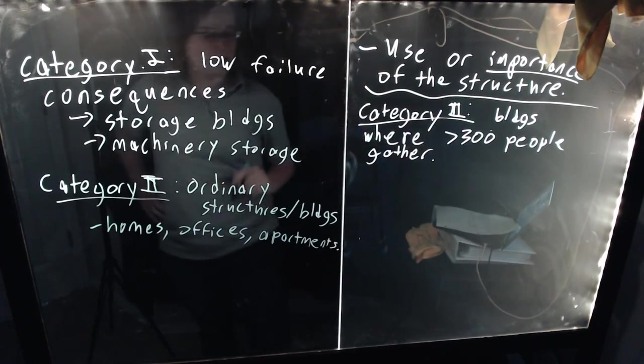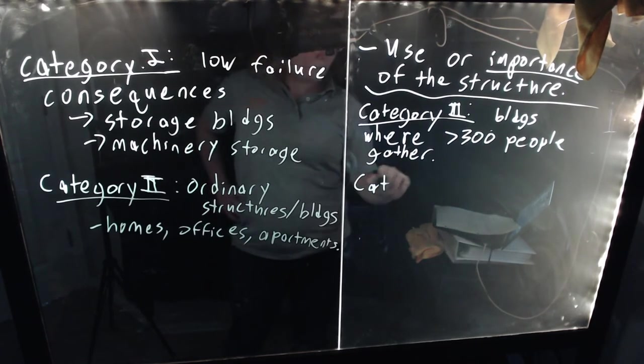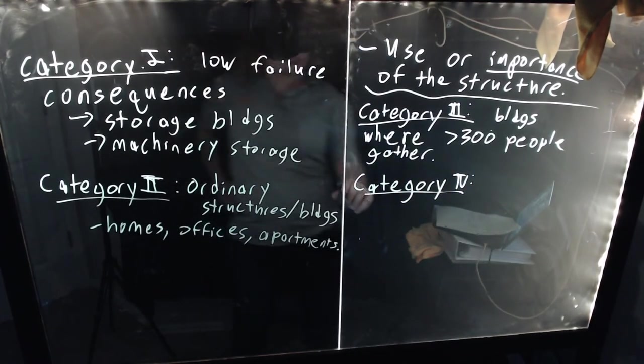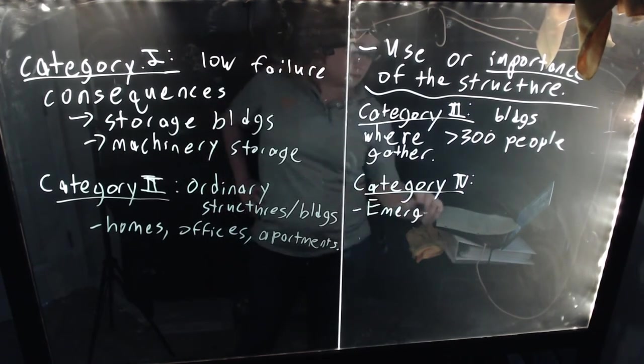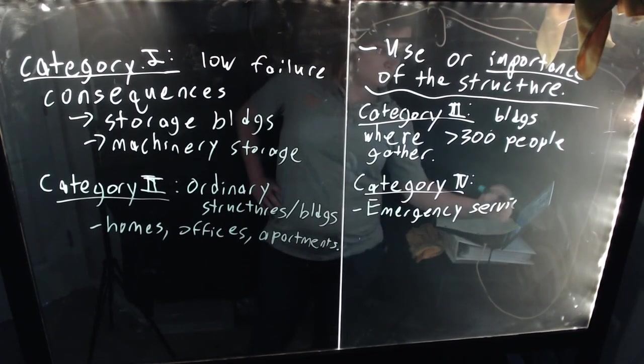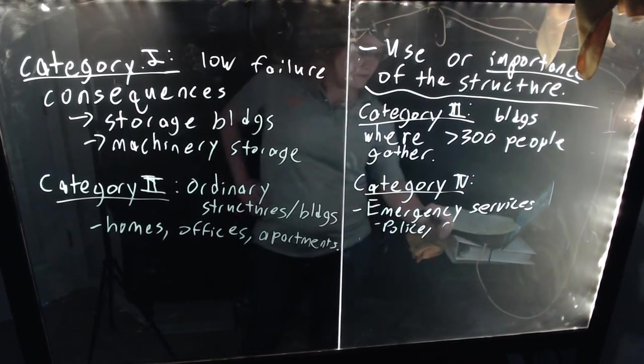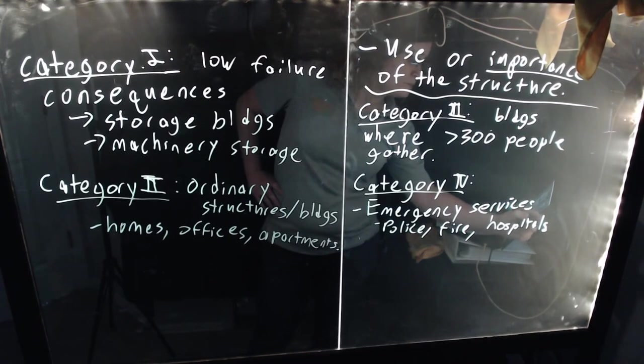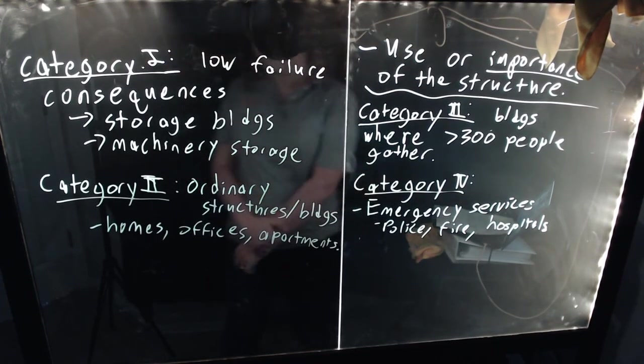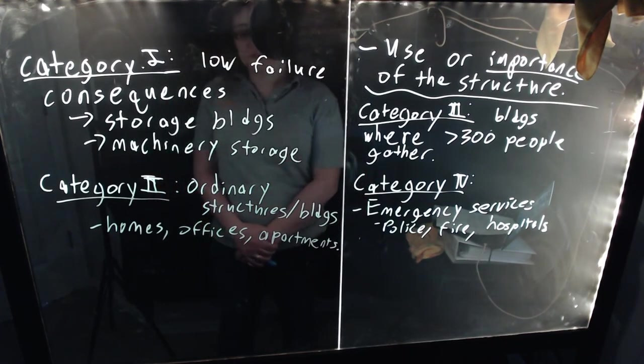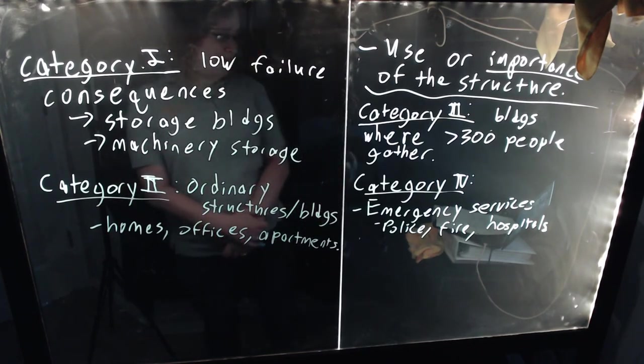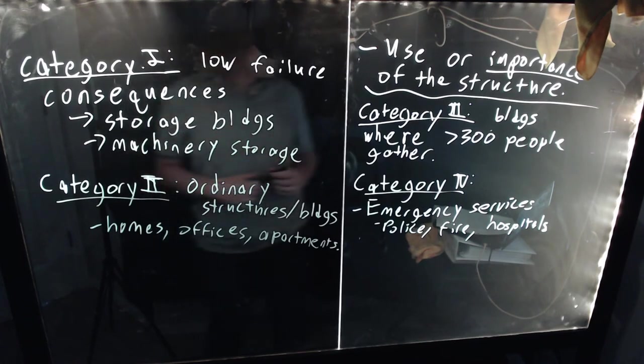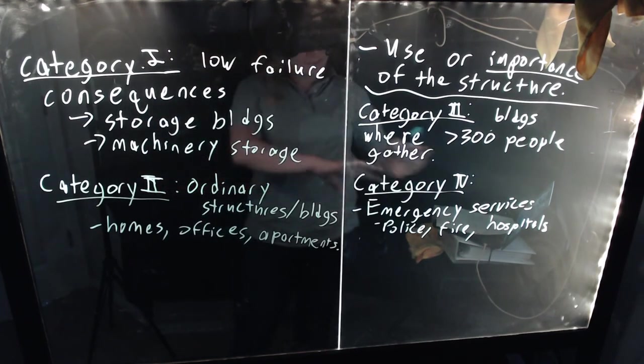And then finally, we have the really important stuff. We have Category IV. These represent two types of structures or two types of buildings. You have mainly your emergency services. Think police stations, fire stations, hospitals. Also think about emergency evacuation sites. Some communities in areas where tornadoes are common will have community tornado shelters, places where people can shelter during a tornado or during hurricanes. The last thing you want is your emergency shelter collapsing during that emergency.